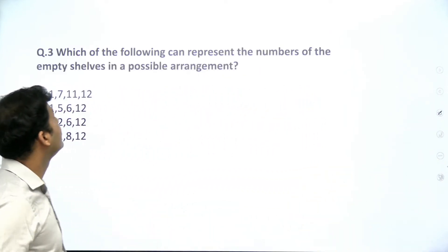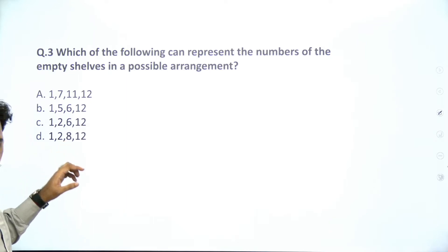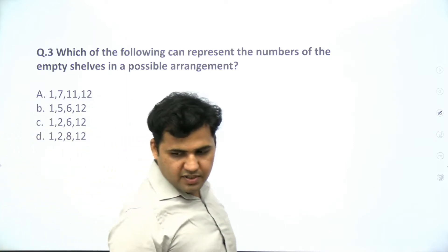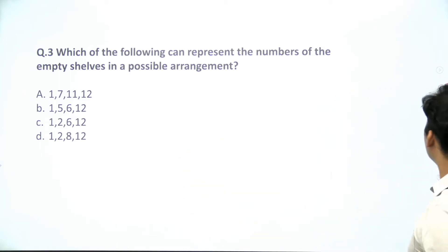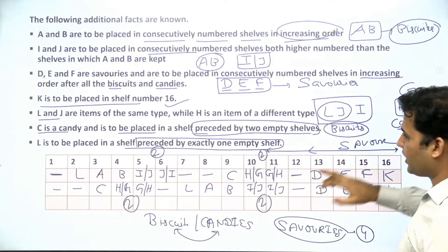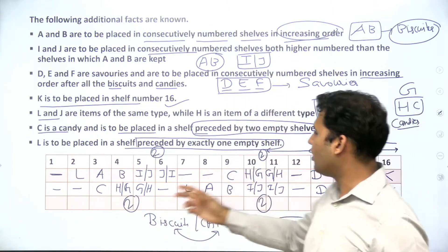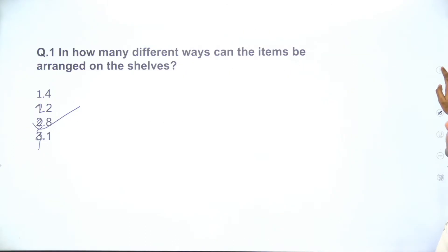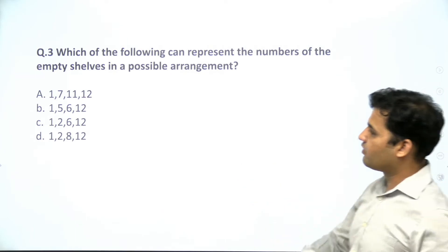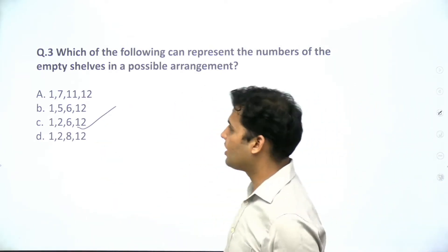Question 3 asks: which of the following can represent the numbers of empty shelves in a possible arrangement? Looking at the arrangements, the empty shelves are either shelves 1, 2, 6, 12 or shelves 1, 7, 8, 12 depending on the case. Option C — shelves 1, 2, 6, and 12 — matches a valid arrangement, so option C is the answer.